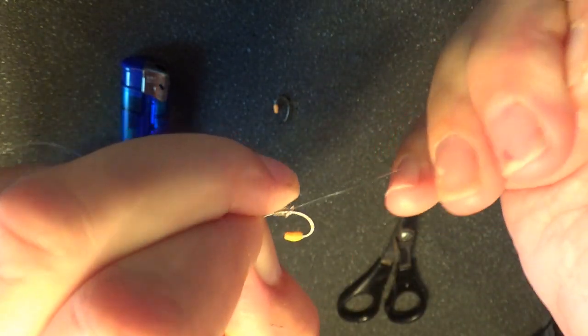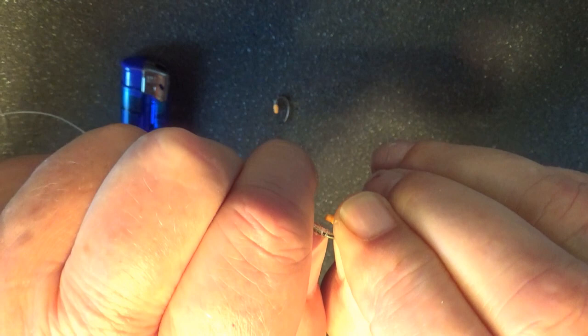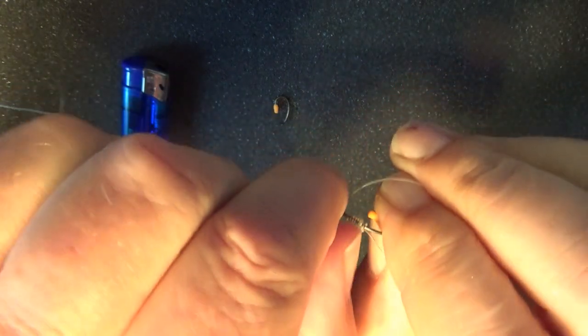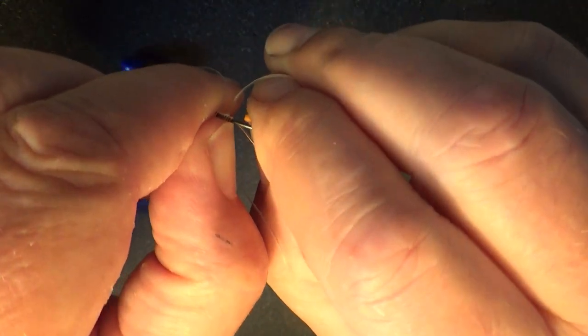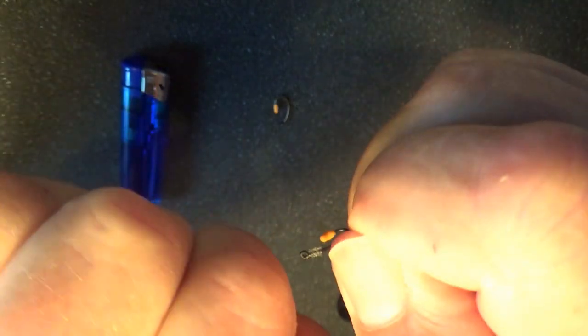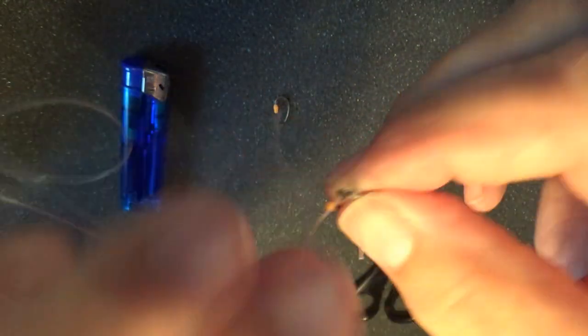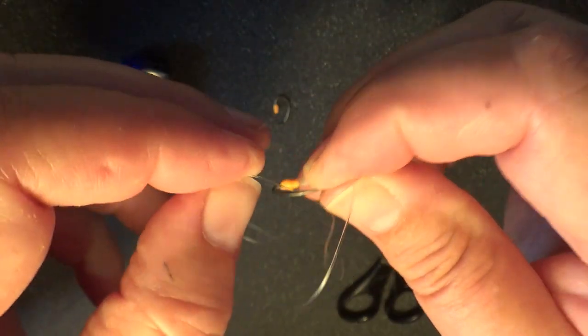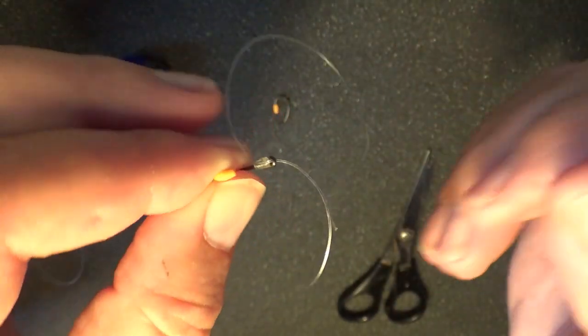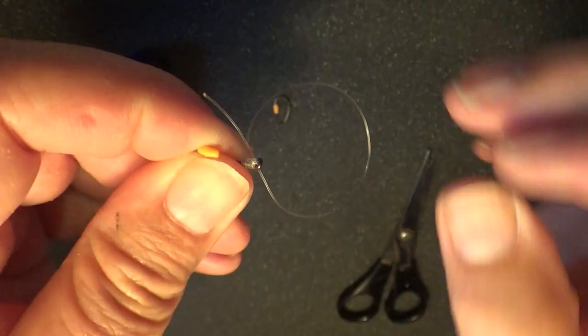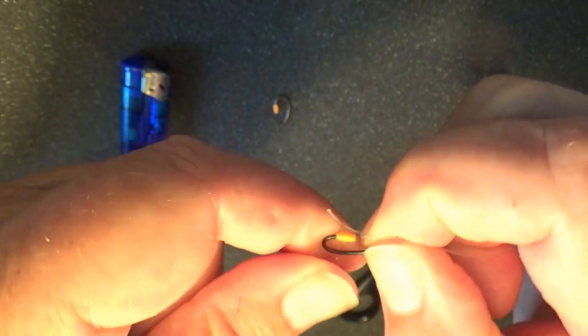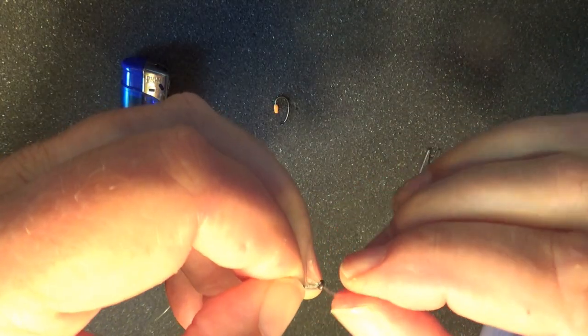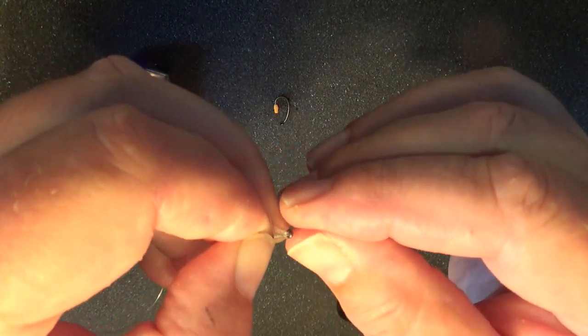Pull the tail, push the knot down, give it a tug, push it down again. Reposition the tail through the eye.